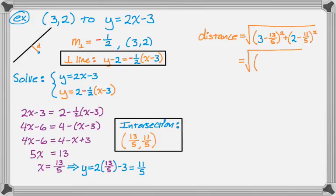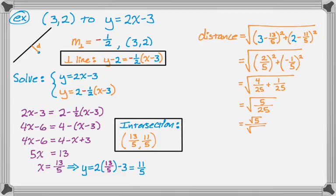That's 15 fifths minus 13 fifths is 2 fifths squared, plus 10 fifths minus 11 fifths is negative 1 fifth squared. When you square a negative, it becomes a positive. So it's the square root of 4 over 25 plus 1 over 25, which is the square root of 5 over 25. I'm going to break this into two radicals: radical 5 over radical 25. The square root of 25 is 5, so radical 5 over 5, and that is the distance.